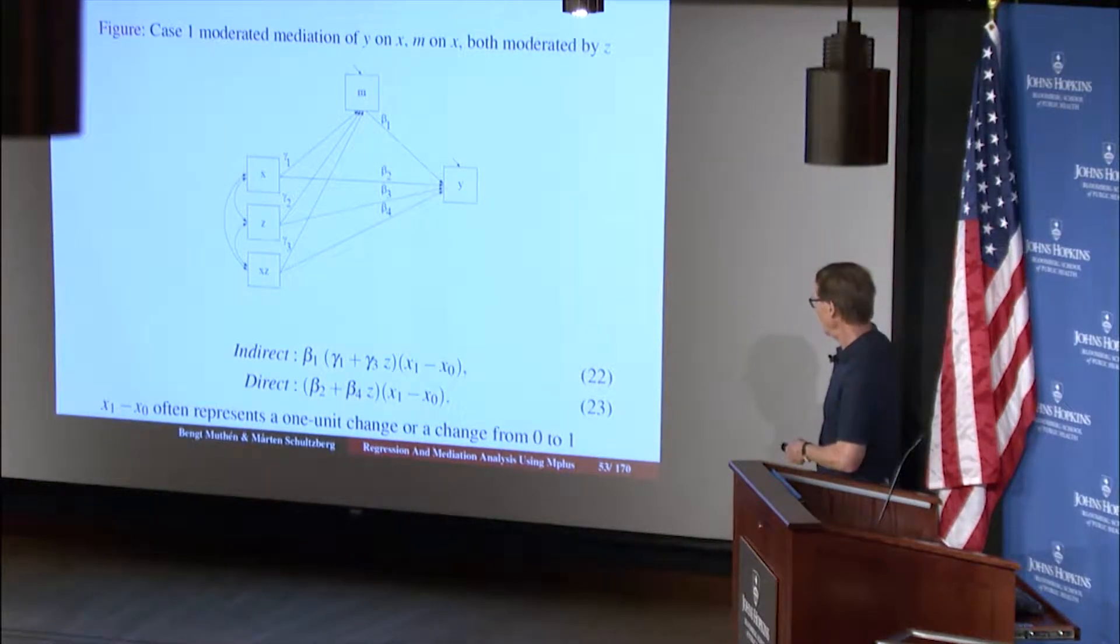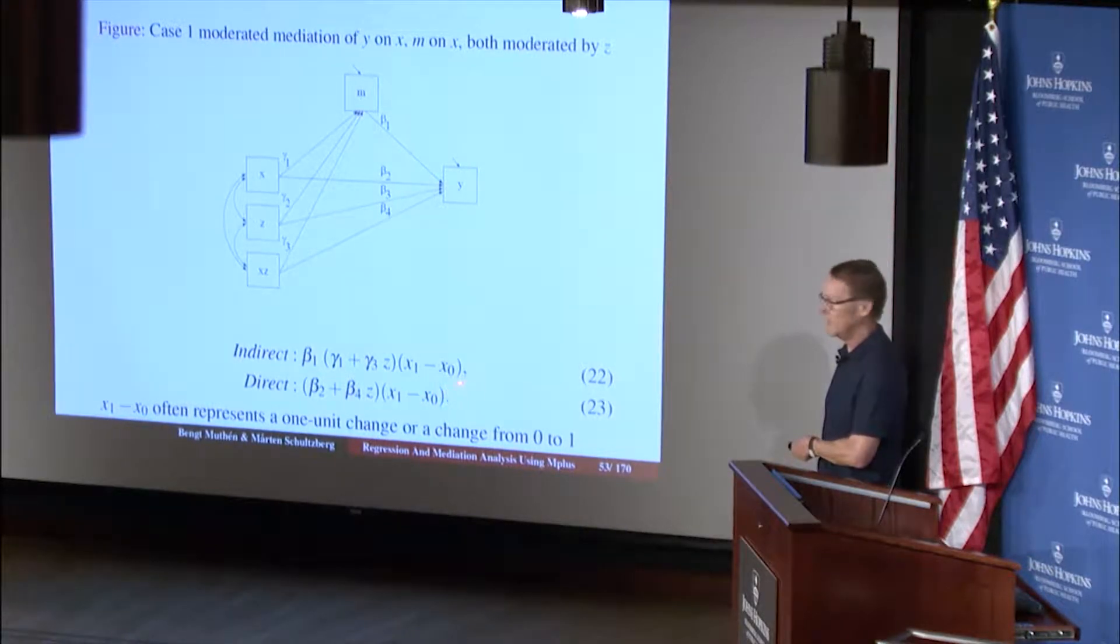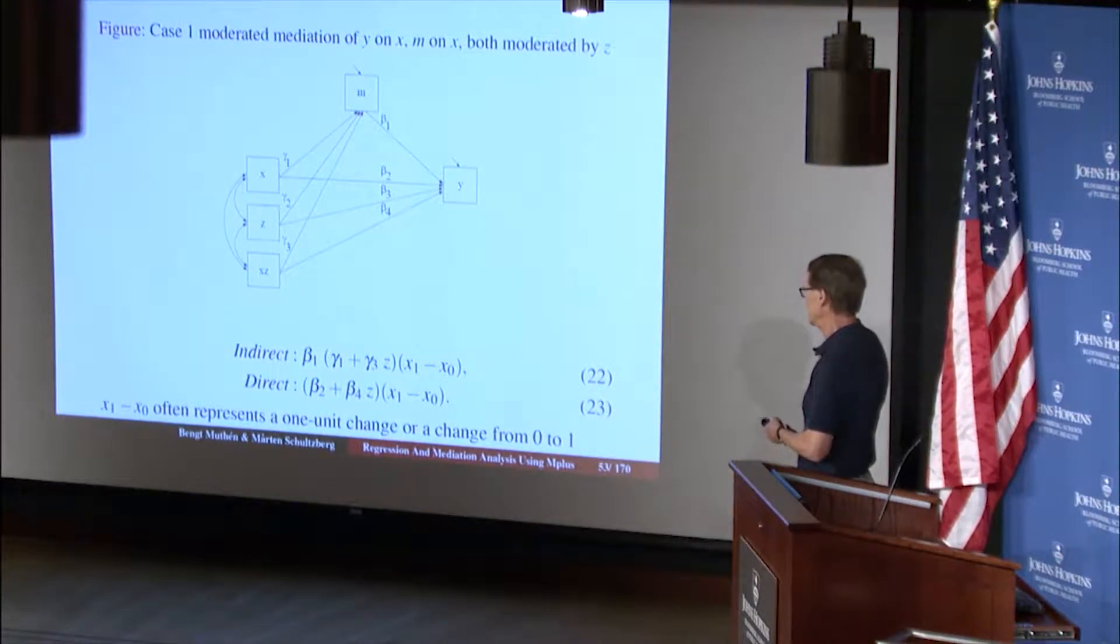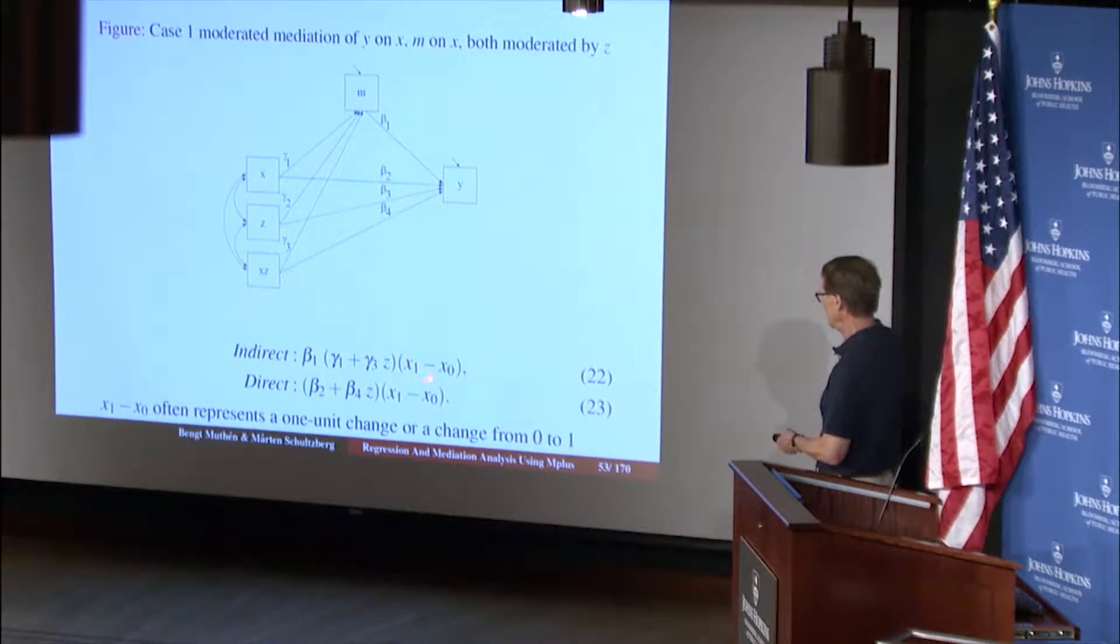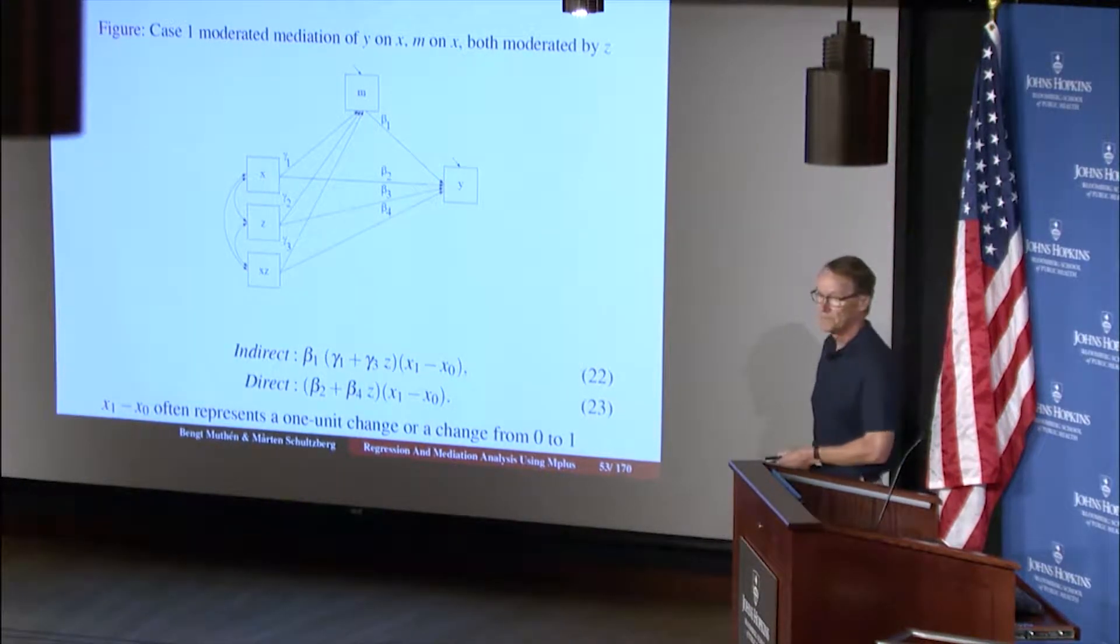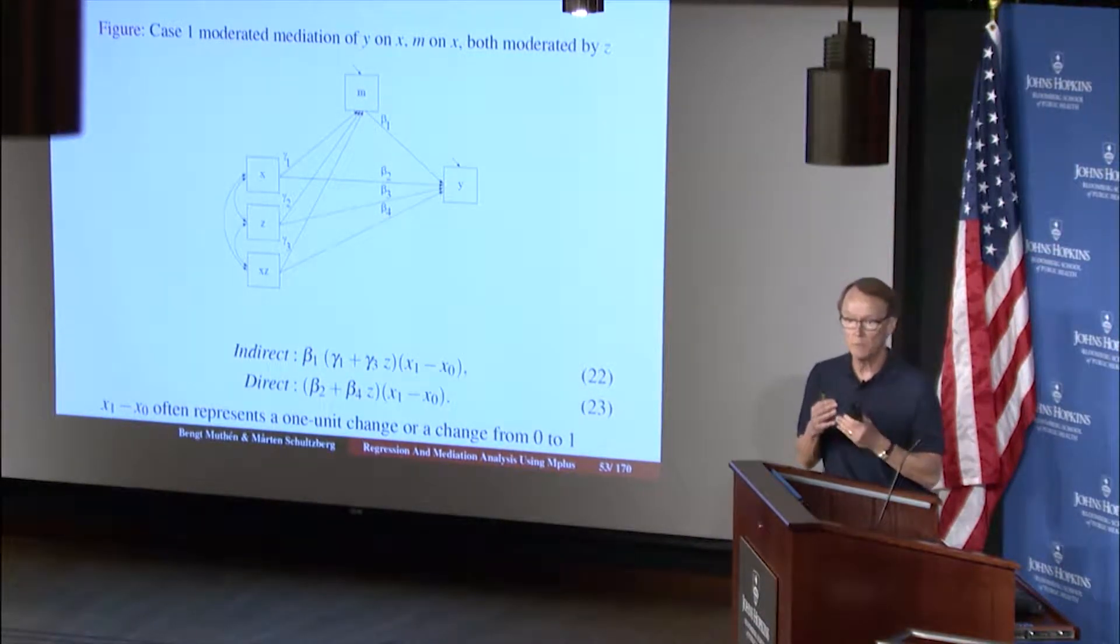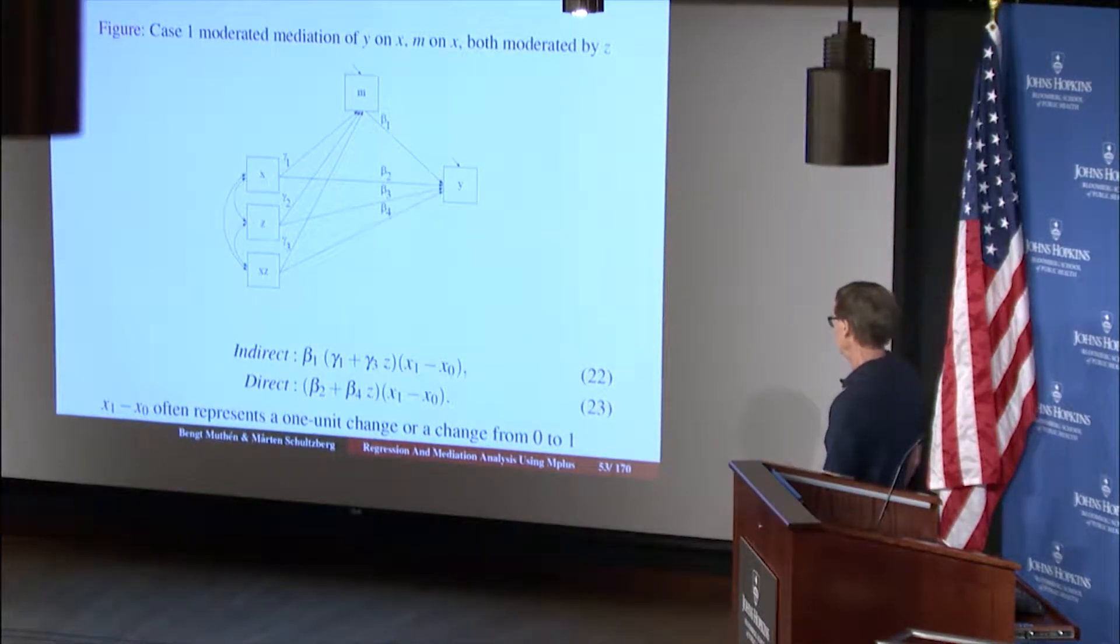Usually this is 1, so it disappears. Why is it 1? If X is continuous, we usually consider a one standard deviation change in X when we talk about an indirect effect, so x1 minus x0 is 1. Or in treatment-control studies, x1 is 1 and x0 is 0, which also comes out to be 1. Working with x1 and x0 explicitly makes it possible to come up with more general indirect and direct formulas for new types of applications. The direct effect is beta 2 plus beta 4 times Z connects to X.